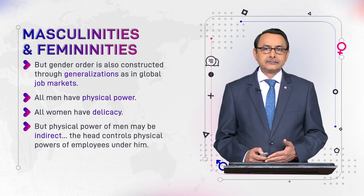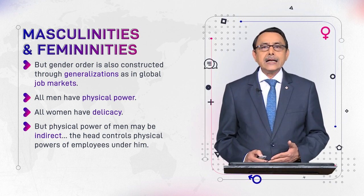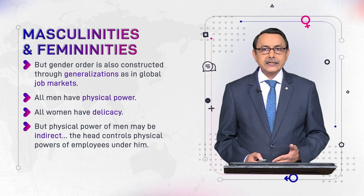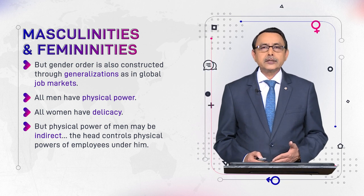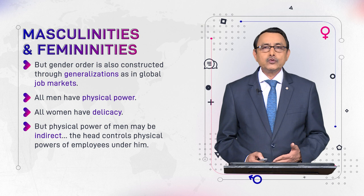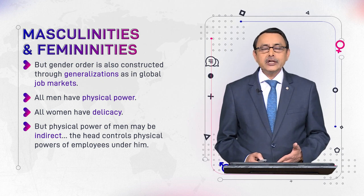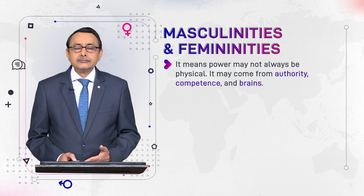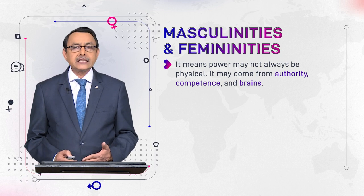However, the physical power of men may be indirect. There is no direct link between physical power and maleness, because sometimes males use their physical power indirectly — for example, when you are a commander in an army or head of a workforce, you ask people how to engage with physical work. In this way you are using your physical power indirectly, or controlling other people's physical power. Power may not always be physical; it may come from authority, competence, and intelligence.